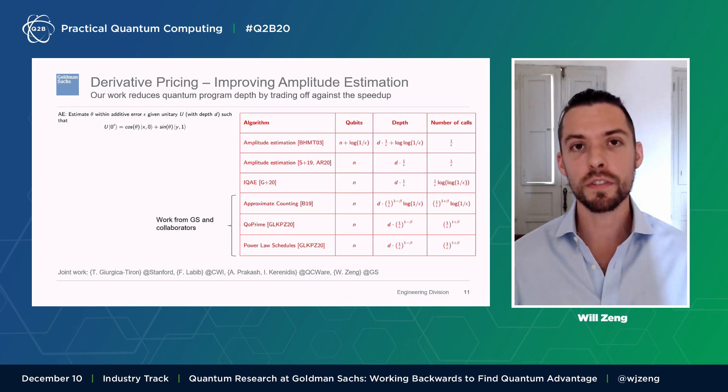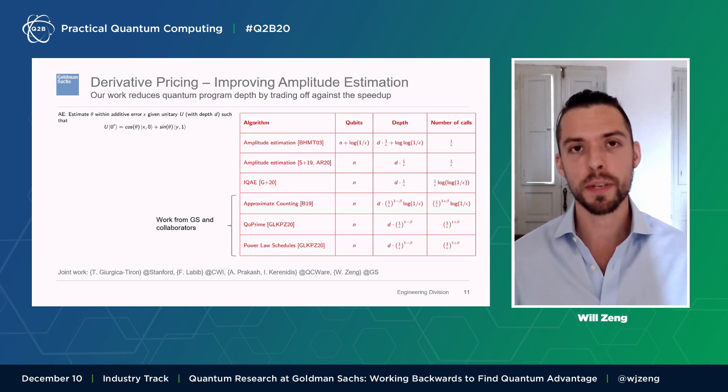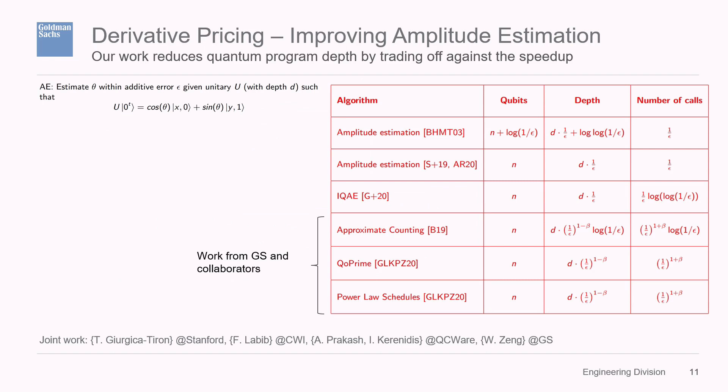A lot of the overhead in derivative pricing on a quantum computer comes from the amplitude estimation step. So one way to improve resource requirements is to make progress on how amplitude estimation is implemented, and we've been working on this algorithmically with collaborators. As a reminder, amplitude estimation is the method for extracting some amplitude stored in a quantum state. The original method, introduced around 2003, shows the number of oracle calls scales like one over epsilon to extract the amplitude, compared to one over epsilon squared classically — giving a square root speedup.